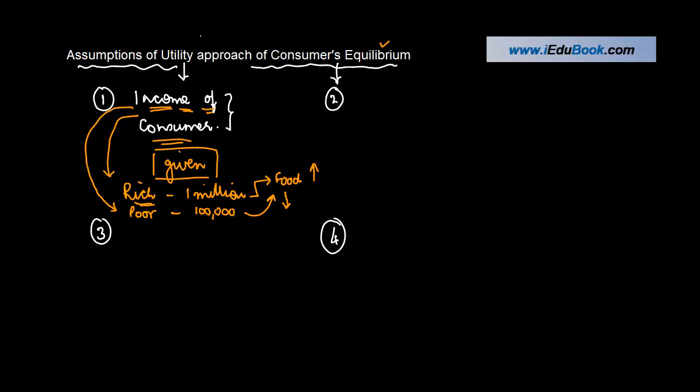Similar is the case with the price of goods and services. Obviously, once you know the income, you also need to know the price of goods and services. They have to be known, and at the same time, they have to remain constant.